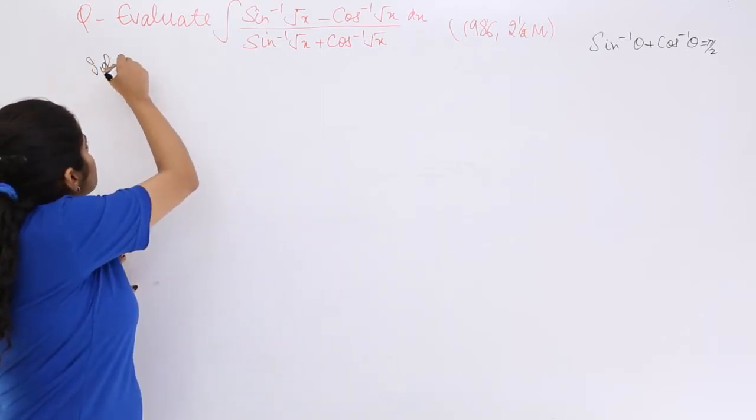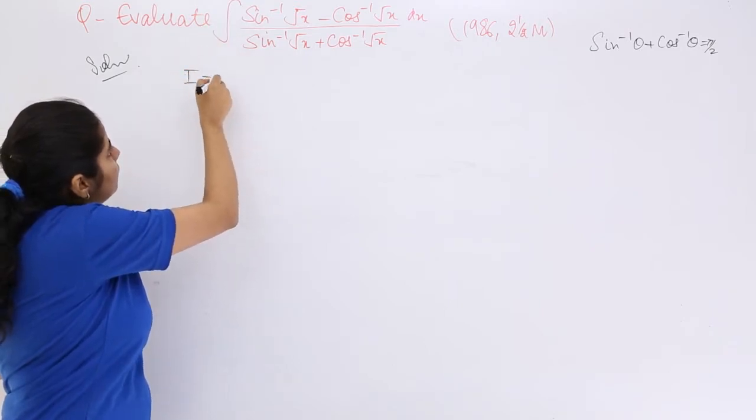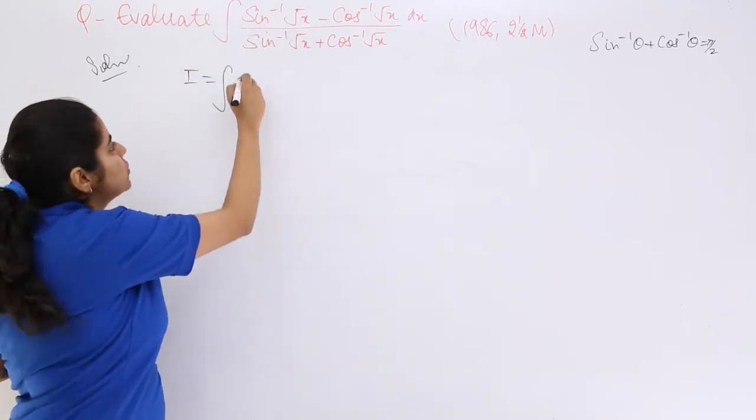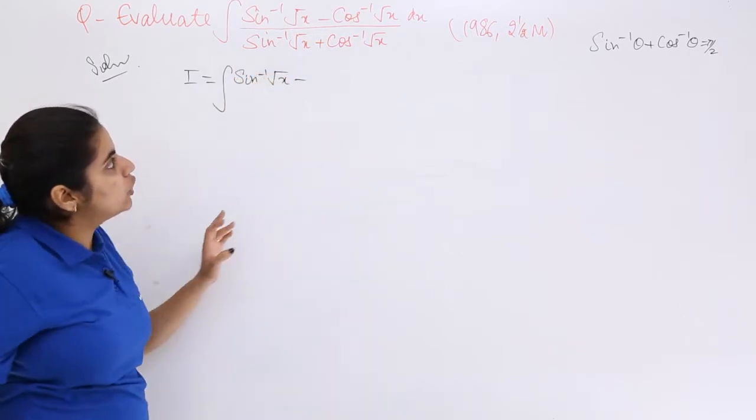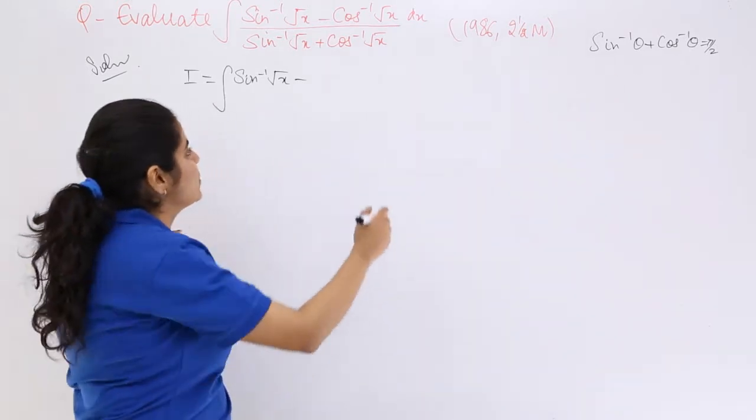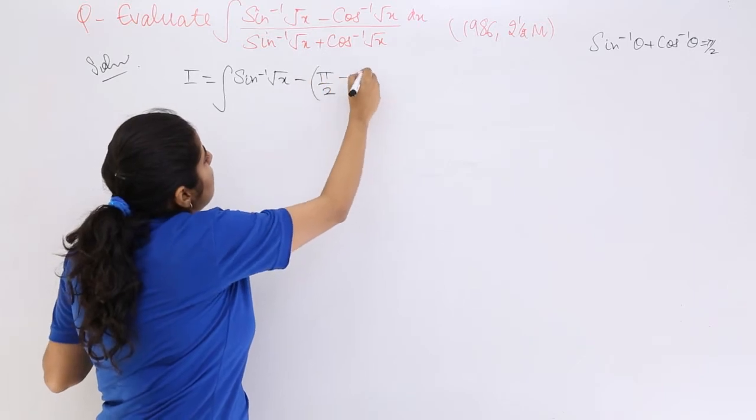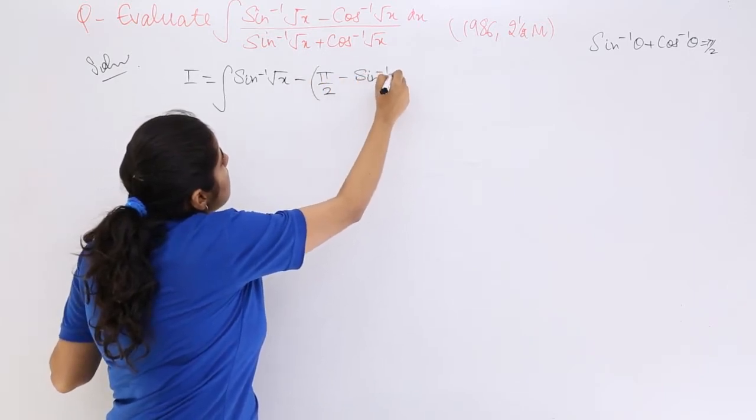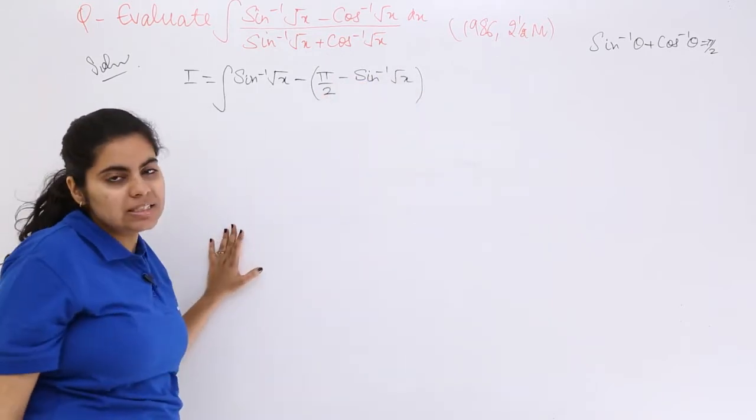The other helpful part is the denominator. If my question is I, I know that sin inverse root x can be written as such, and cos inverse root x will be π/2 minus sin inverse root x.